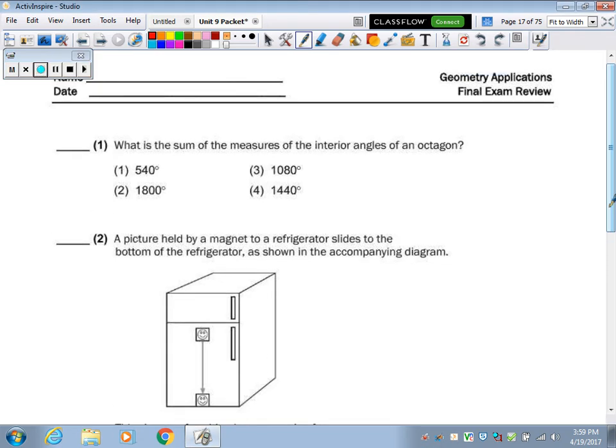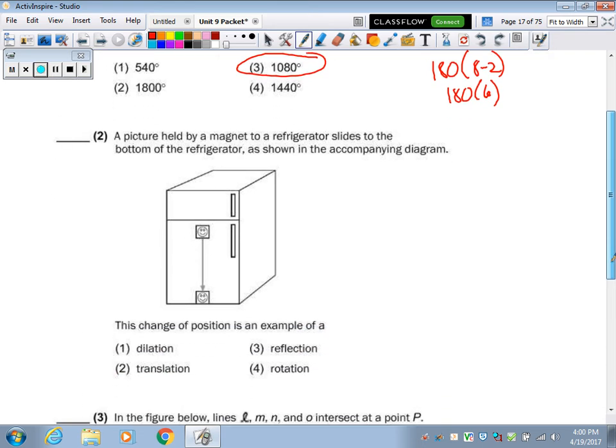So question one, what's the sum of the measures of the interior angles of an octagon? So octagon has eight sides. Hopefully you remember that it's 180 times 8 minus 2, 180 times 6. And that comes from the 6 comes from 6 triangles. So there's 6 triangles. You can divide up the octagon into 6 triangles, and each of the triangles has a degree sum of 180, so 6 times 180.